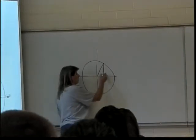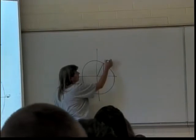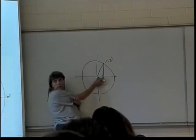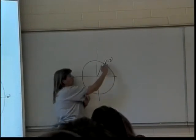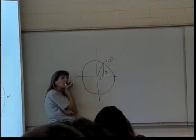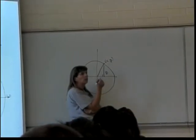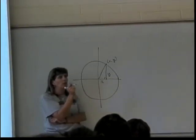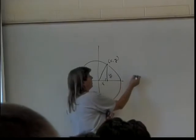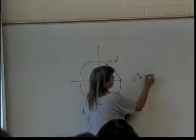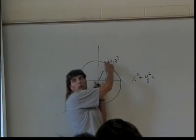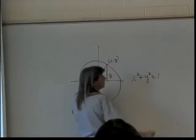Now, if this point had the coordinates (x, y), what can you tell me about the length of this side of the triangle? It's the x. It's the same as the x-coordinate. What can you tell me about the length of this side of the triangle? It's the y-coordinate. And what do we know about right triangles? The Pythagorean theorem: x squared plus y squared equals, well, it's the radius squared. But I just told you the radius is what? One. And one squared is just one.